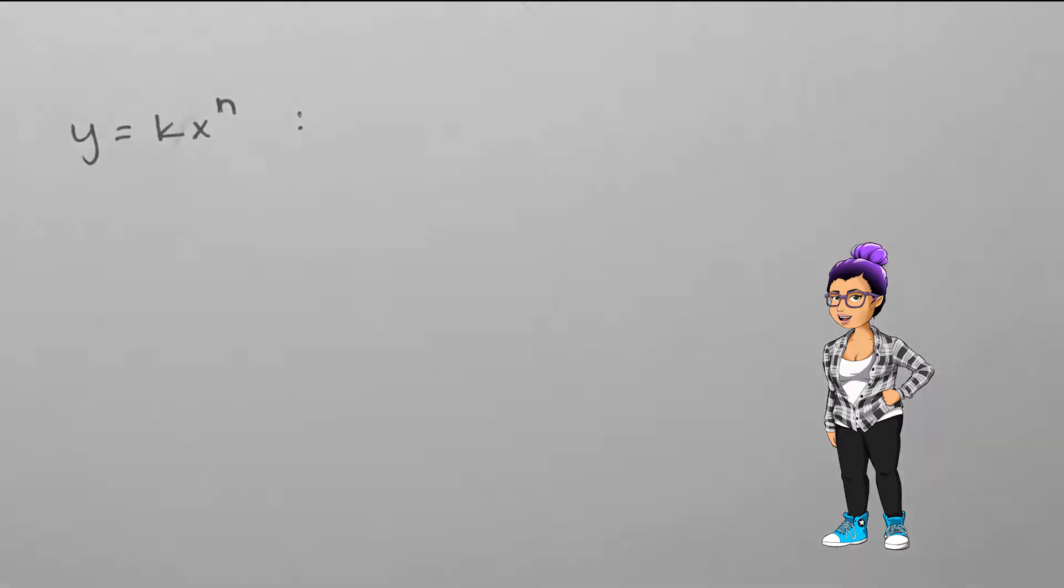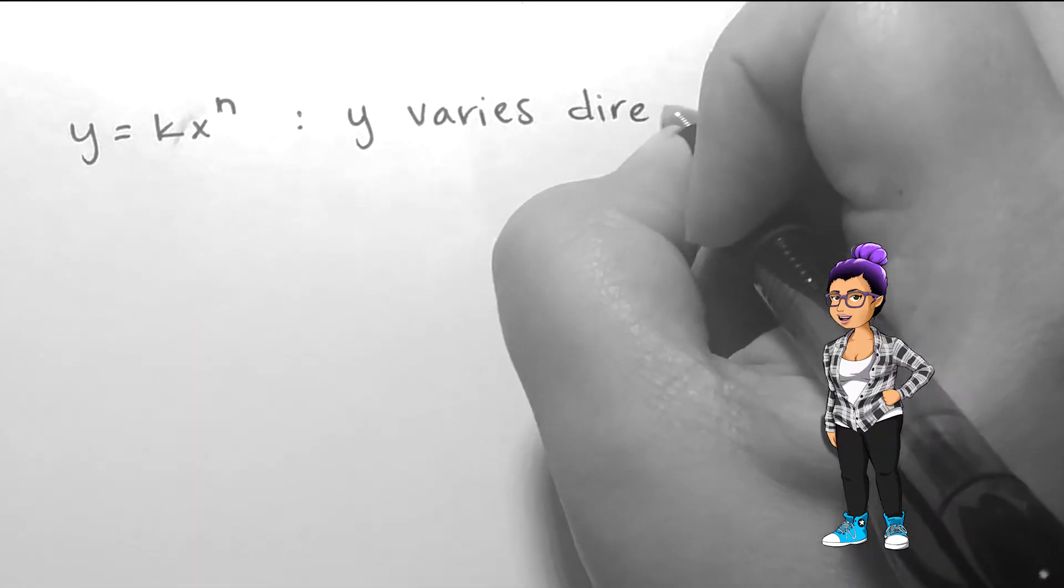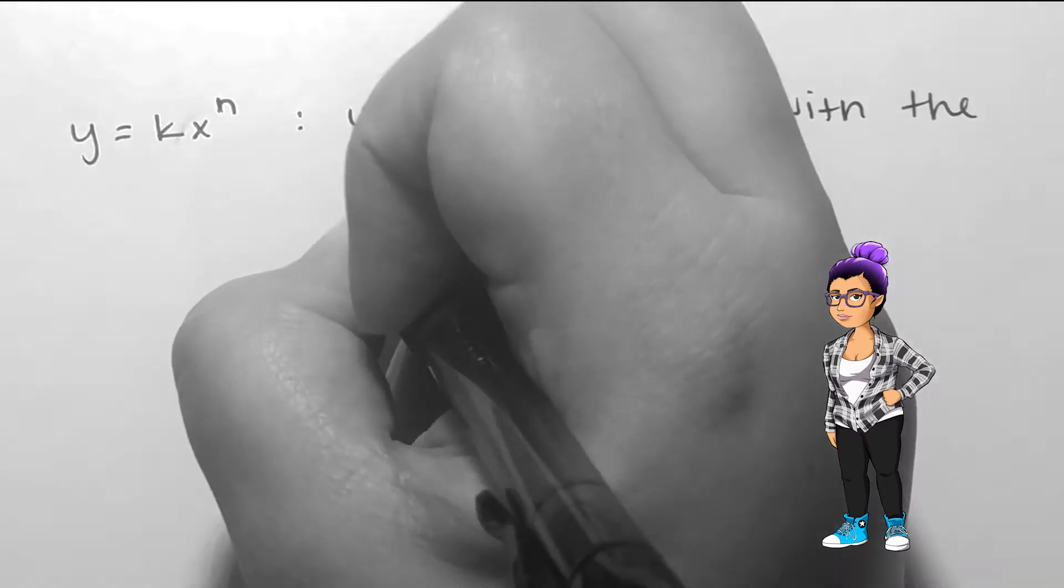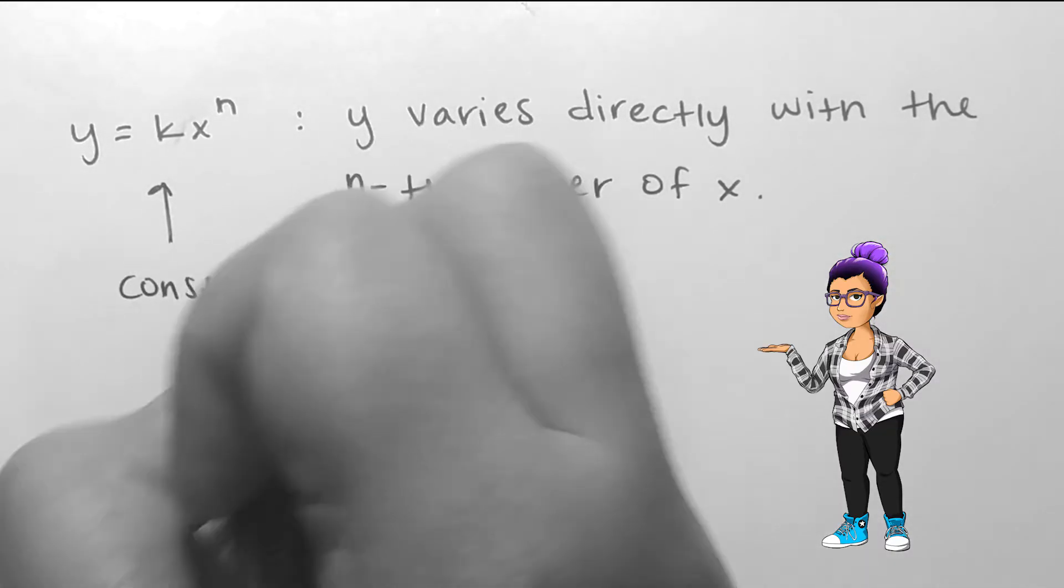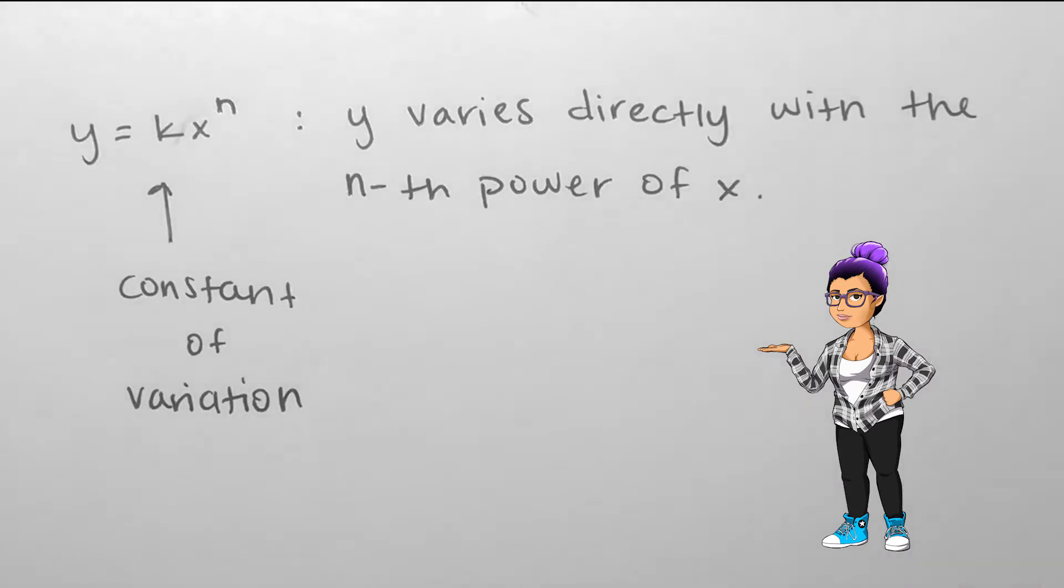In general, if y equals k times x to the nth power, we say that y is in direct variation with the nth power of x. The constant of variation is k.